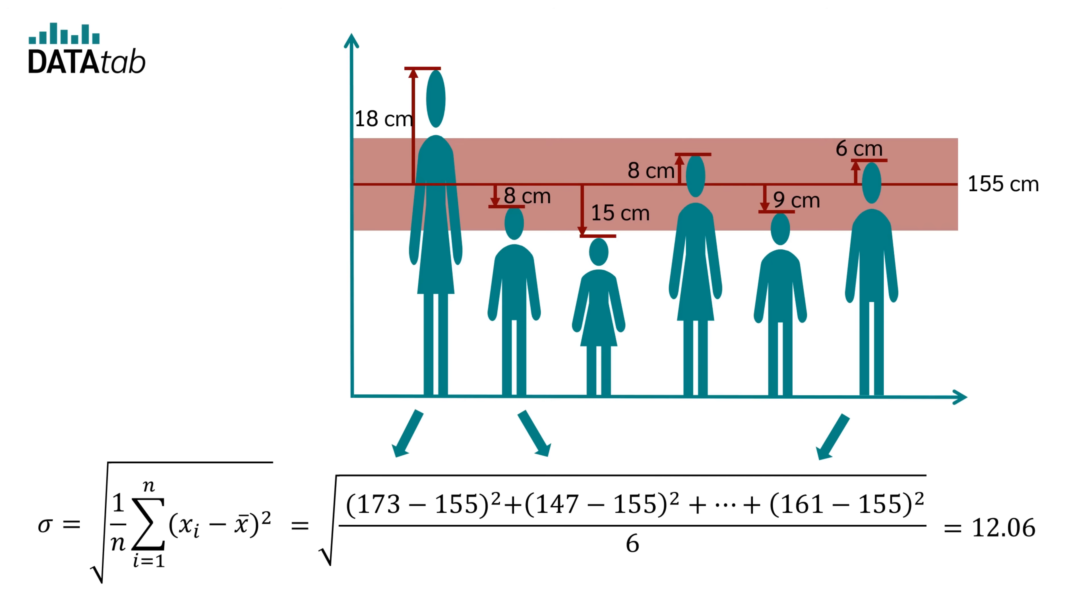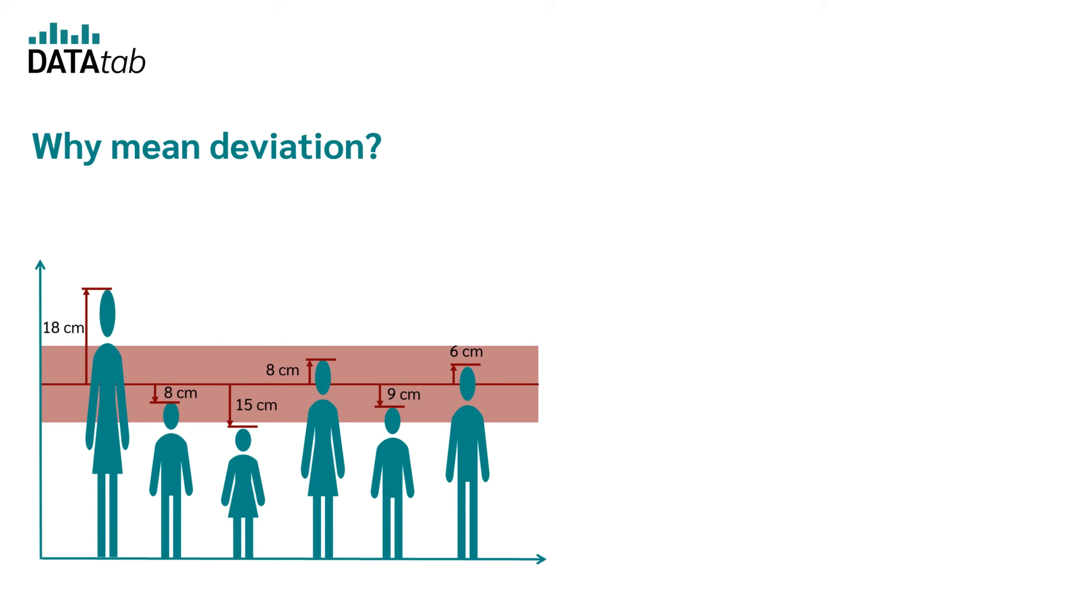Now you might notice one thing. I always talk about the average deviation from the mean. But for the average deviation, I would actually just add up all deviations and divide it by the number of participants, just like you calculate a mean value, right? You're absolutely right, but there are different mean values. In the case of the standard deviation, it's not the arithmetic mean which is used, but the quadratic mean. If the arithmetic mean would be used, the result would be zero every time.